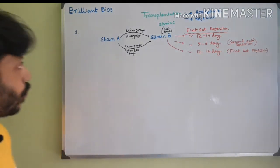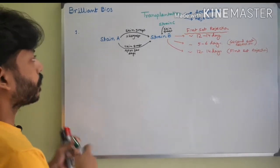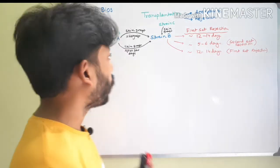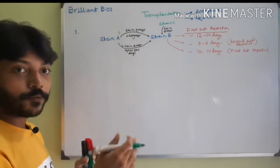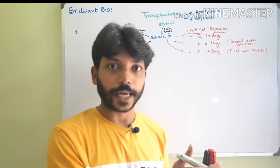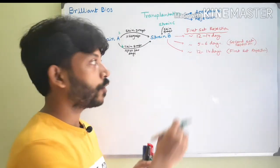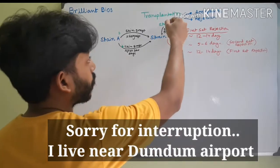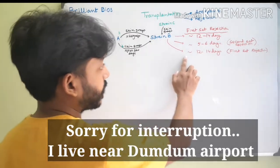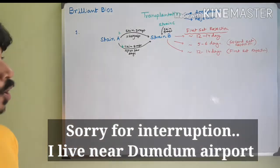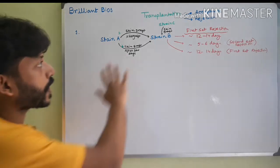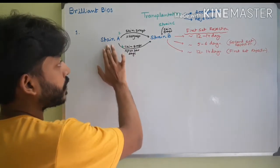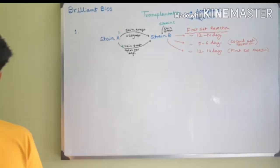So from this experiment scientists concluded: when skin is transferred from strain A to strain B for the first time it takes 12 to 14 days to reject; the second time it takes only five to six days; and with strain C it takes 12 to 14 days again. This specificity indicates that some memory is present in the strain B mice that helps faster rejection of strain A skin grafts.